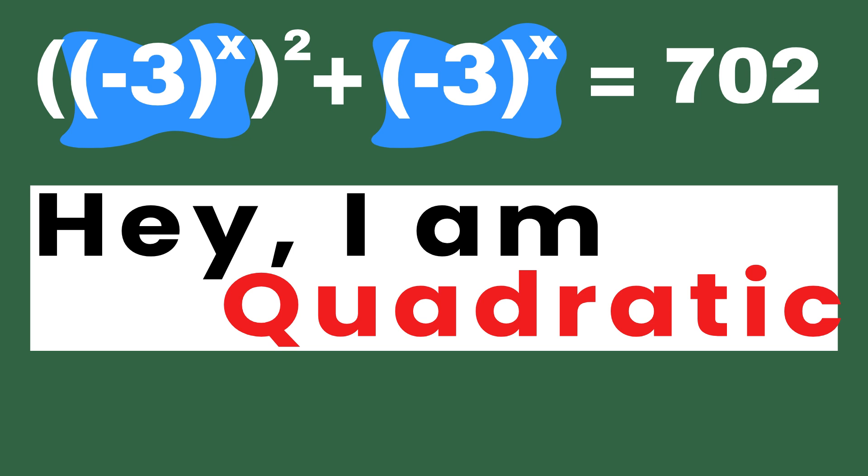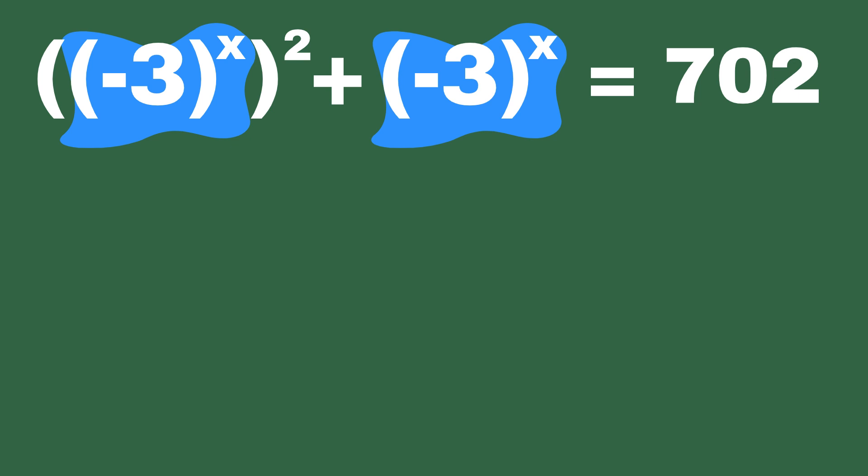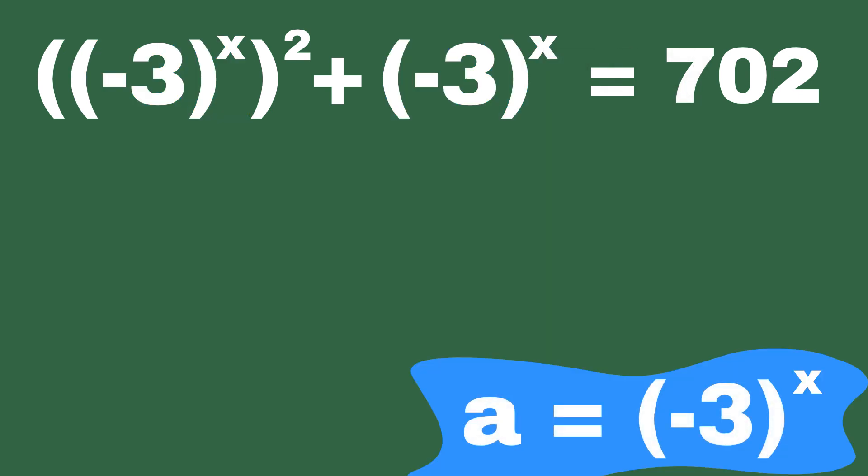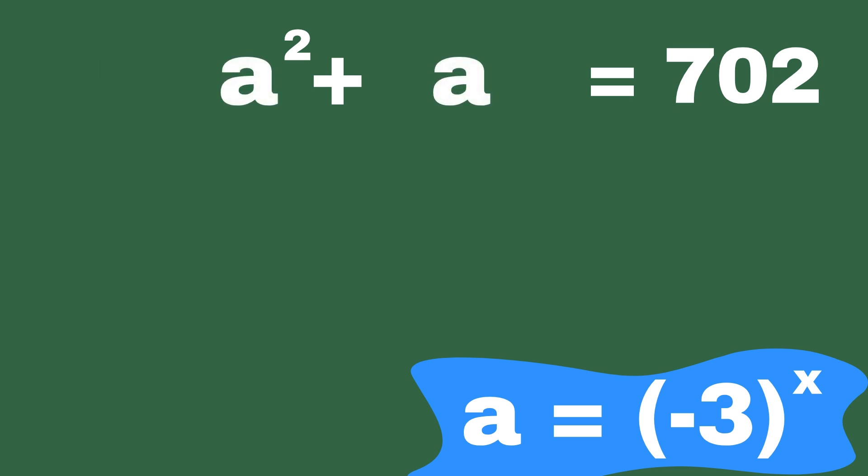If it hasn't clicked for you just yet, don't worry, we'll break it down even further. Let's introduce a little substitution to make things clearer. Let's say a is minus 3 to the power of x. So, if we replace minus 3 to the power of x with a in the original equation, what do we end up with? It's like giving the equation a quick makeover to reveal its true form, just a simple quadratic equation.